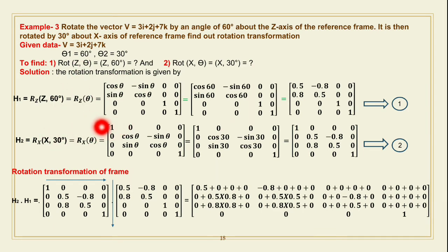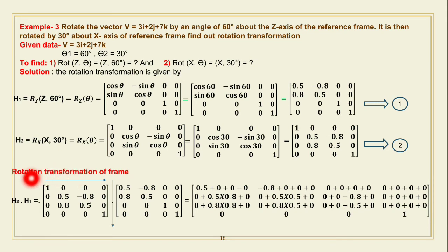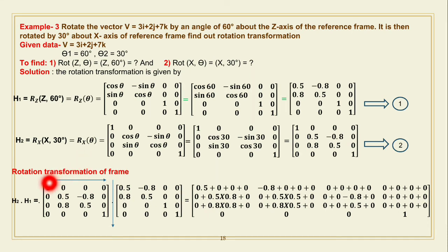Now combine both rotations into one rotation transformation. The combined rotation is H = H2 × H1, where H2 is the second rotation (about X) and H1 is the first rotation (about Z). For matrix multiplication, we use rows of H2 times columns of H1: the element at each position equals the sum of products of the corresponding row elements and column elements.